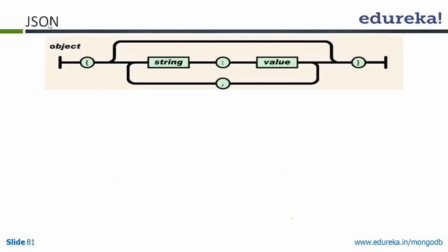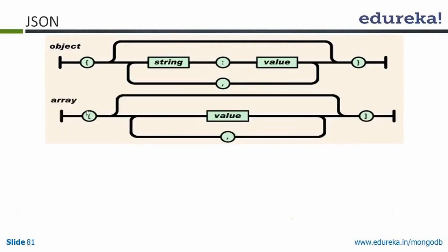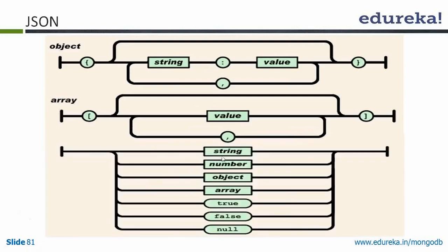JSON starts with curly braces and ends with curly braces, then you have key and value, then comma, key, value, and so on. An array uses square brackets, then value, comma, value, and so on. Supported data types in JSON include: string, number, object, array, true, false, and null.